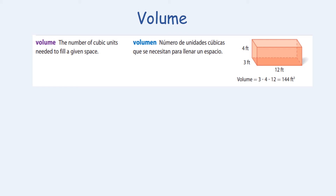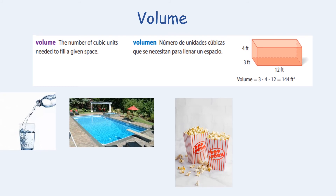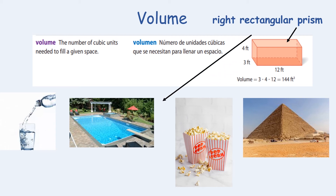Volume is the number of cubic units needed to fill a given space. Volume can be found in items such as the amount of water to fill a cup or a pool, how much popcorn fits in a container, or how much material was used to build a pyramid. A right rectangular prism has all right angles at 90 degrees with rectangular faces. Of the images shown, the pool would be considered a right rectangular prism.